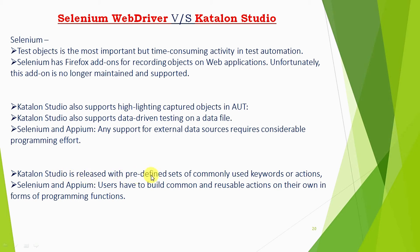Katalon Studio is released with a predefined set of commonly used keywords and actions. In Selenium and Appium, we write common functions and reusable actions as programming functions covering all business logic and common actions. But in Katalon Studio, all these things are already available as predefined keywords and actions — whatever functions we write in Selenium, Katalon Studio already has them built in. We just need to call these functions directly and they will work as per our requirement.